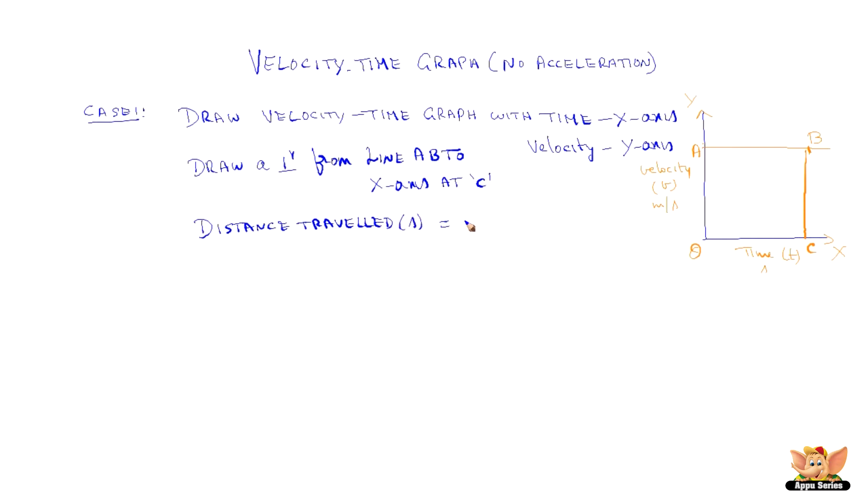We know the distance travelled by the body s is equal to velocity into time. Velocity is represented by V, time is represented by T. Now from the graph, the distance travelled s is equal to BC times OC.